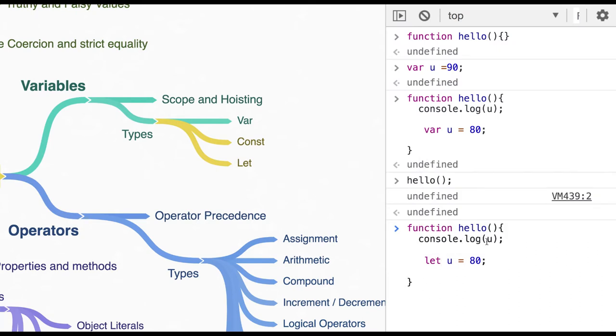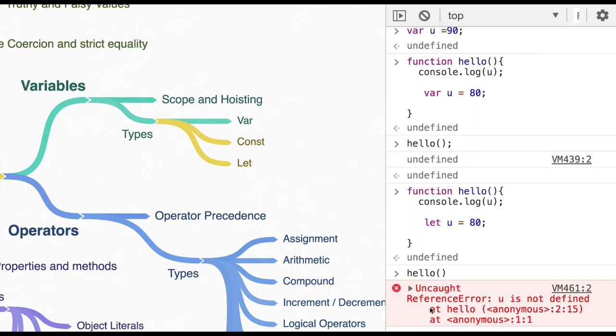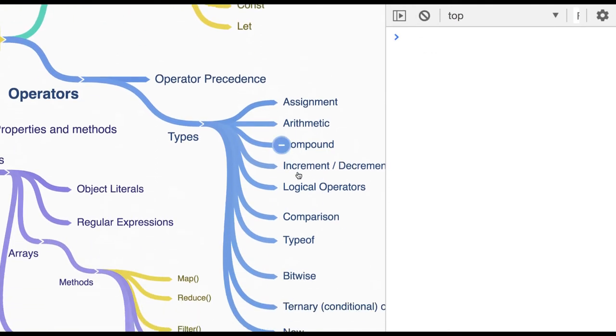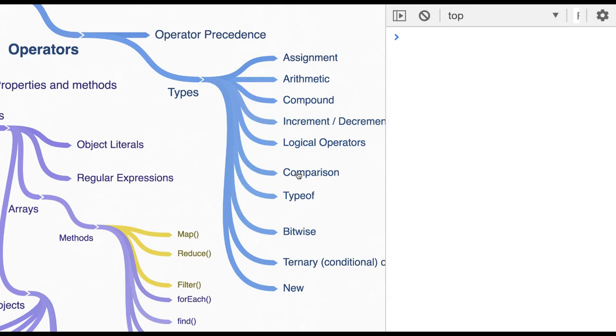But when you are declaring things with the let keyword, let u, and you are calling this, then u is not defined. So you are doing console.log u and u is not defined there, so obviously you will get an error when you are creating the variable with let and const. Operators are basic for any programming language construct: arithmetic, compound, increment, decrement, logical operators.